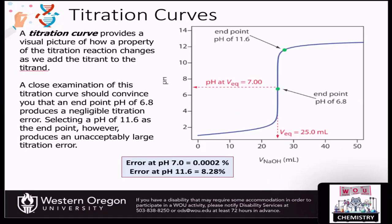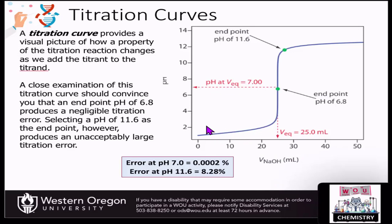When we're doing our titrations, we can plot what's called a titration curve. This gives us a visual picture of the properties of the titration reaction and how they change as we add the titrant. In this acid-base titration, we have sodium hydroxide being added to our solution and we're watching the pH change. Before we reach the endpoint, the addition of sodium hydroxide is not having a large effect on the pH. As long as we haven't reached the equivalence point, there is still excess acid in solution keeping the pH very low.